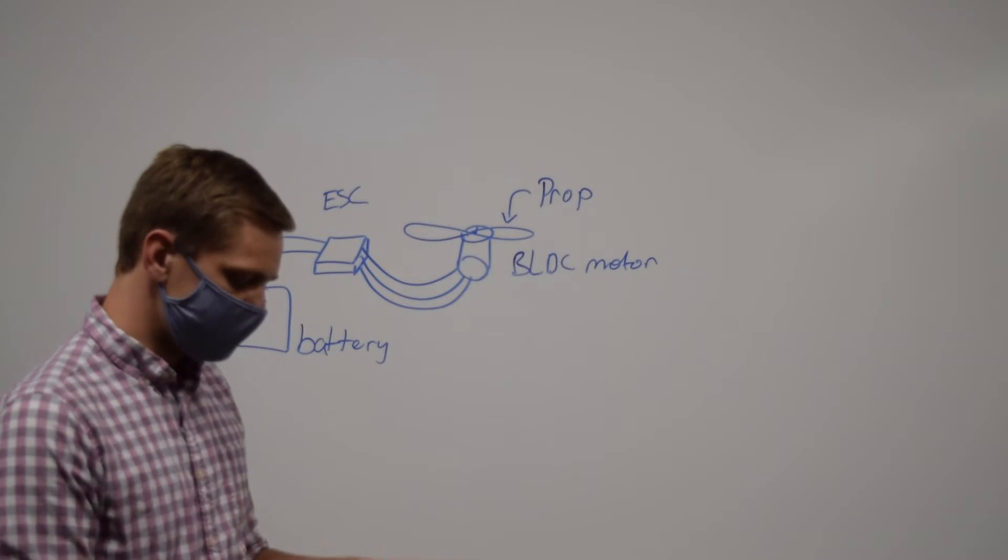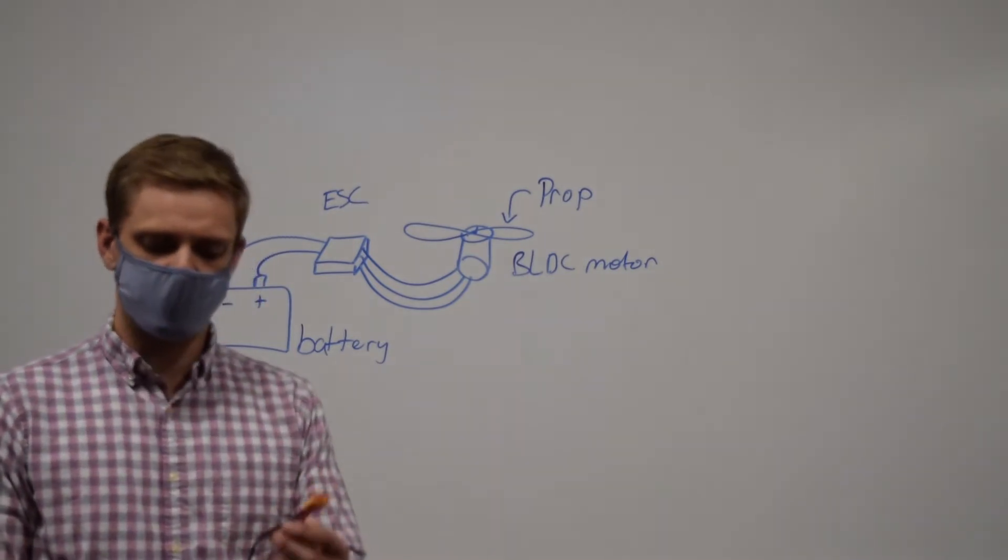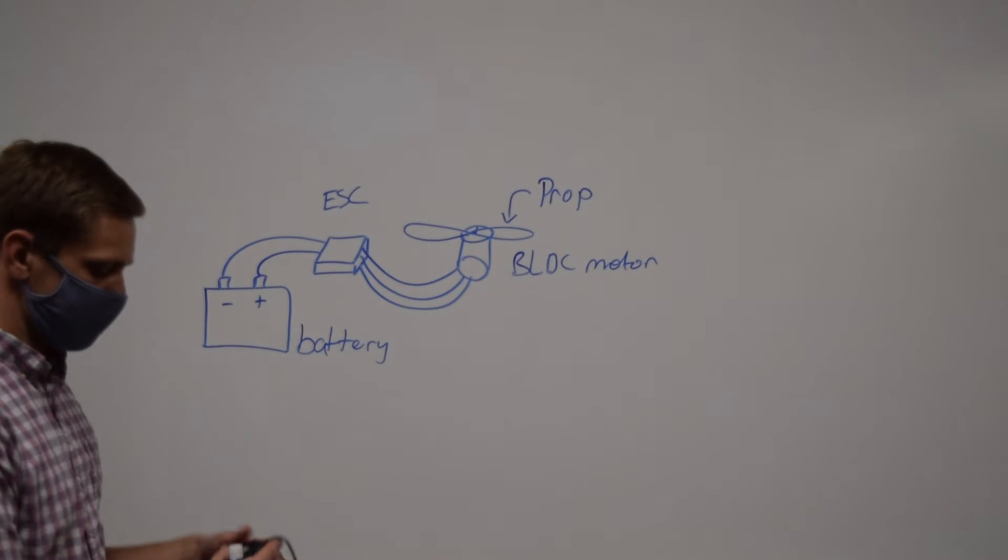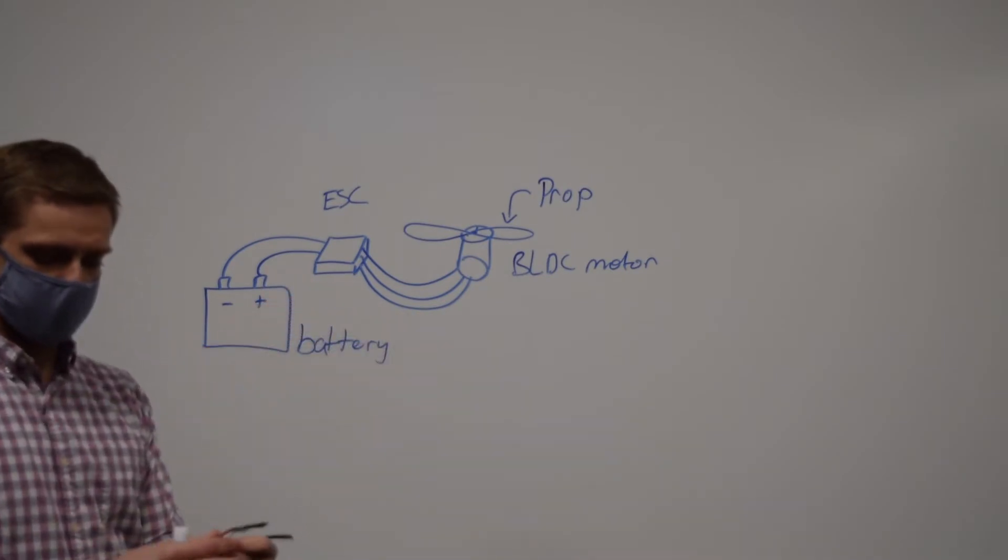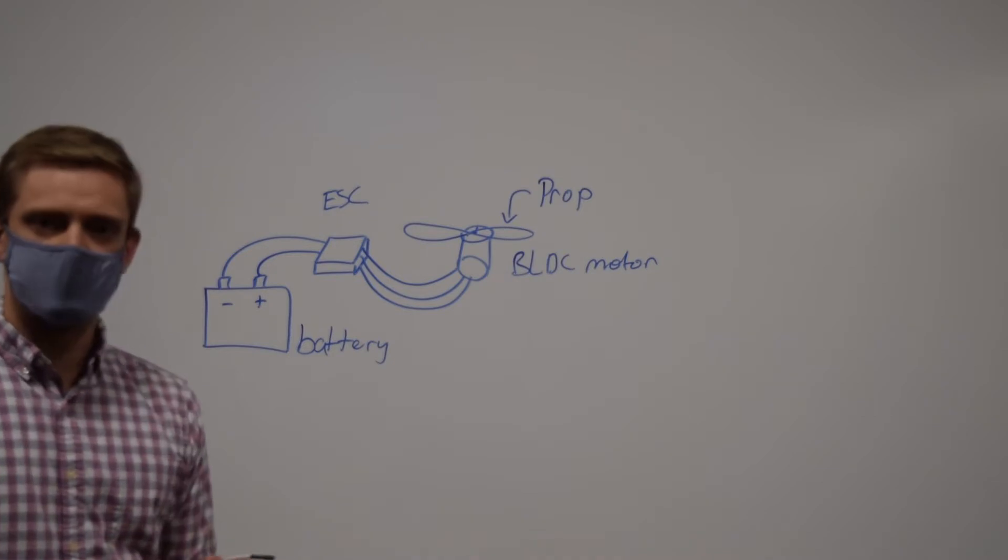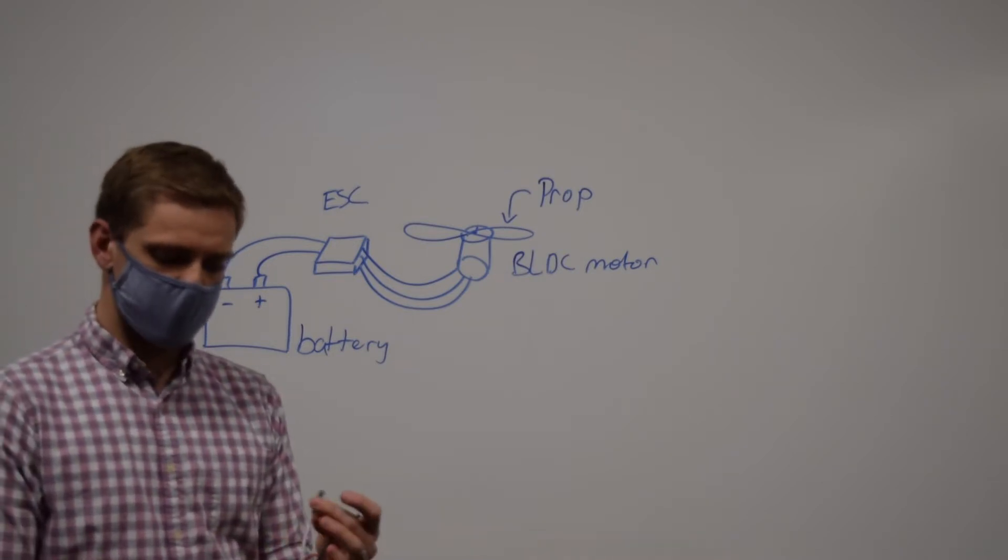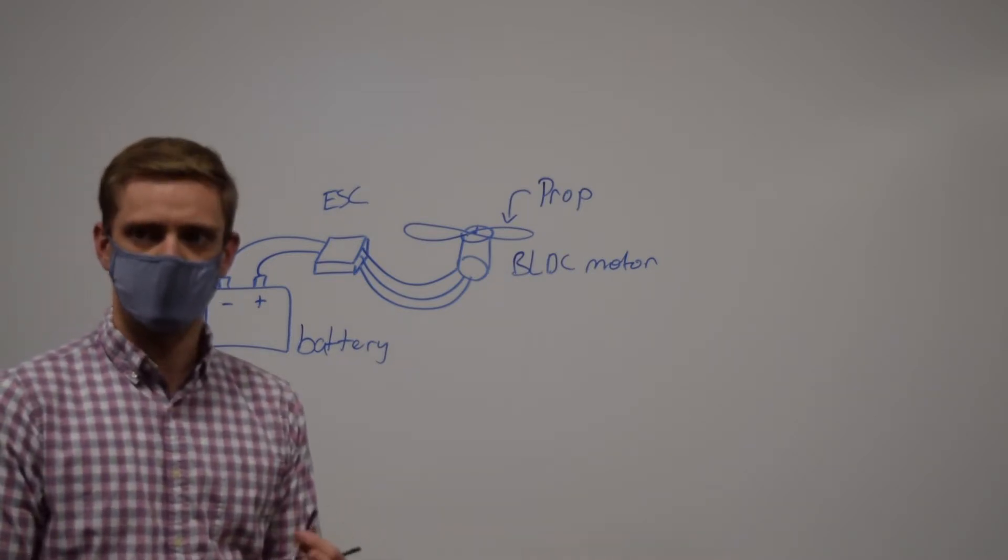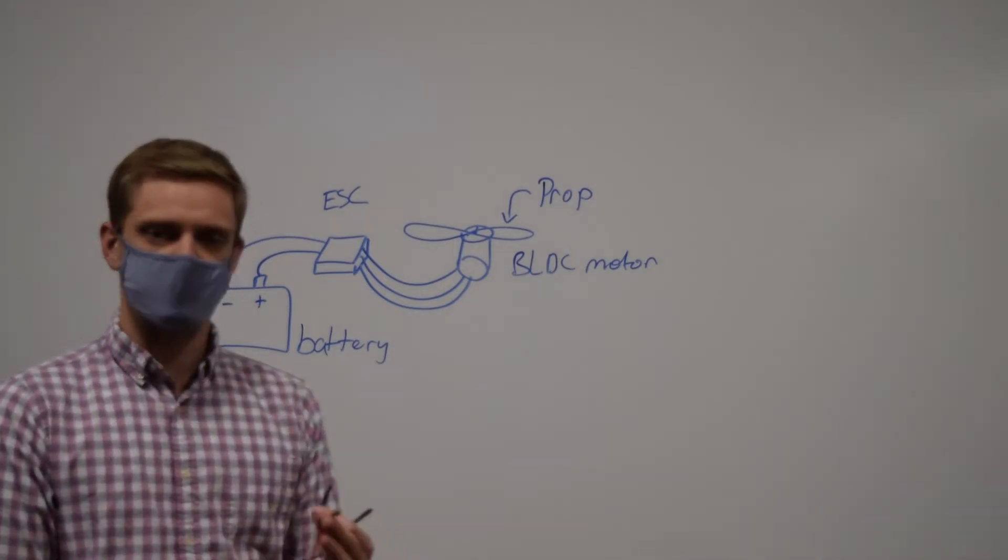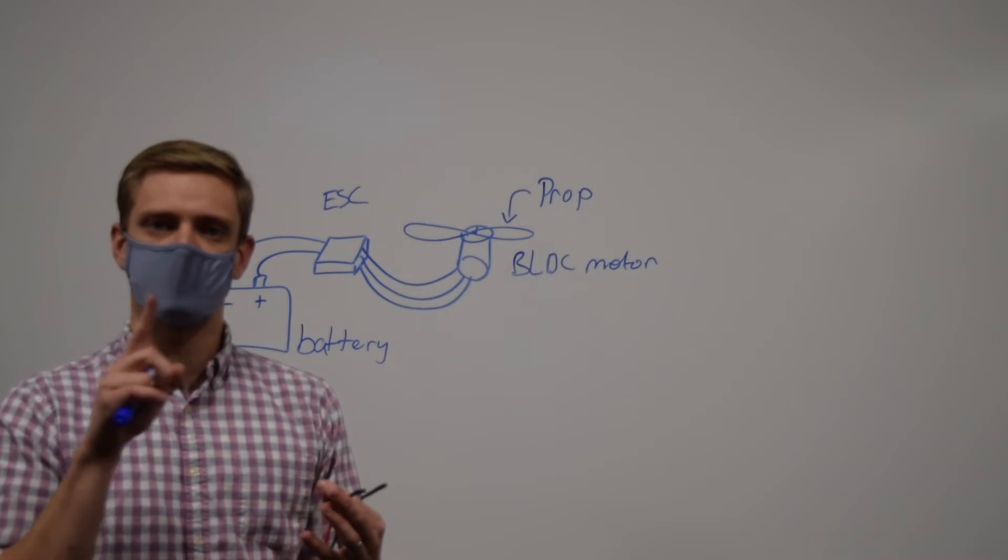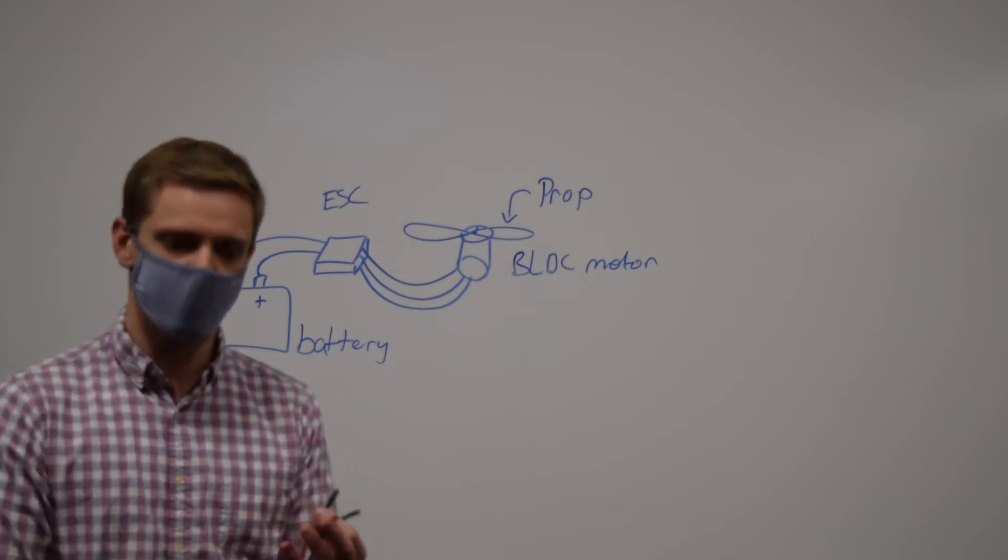You can see coming out of the speed controller, going into a speed controller, you have two plugs that go to your battery and it receives power. Coming out of your speed controller, you have three wires. These are the three poles that are going to control your motor and control the speed. These are different sections of electromagnets that are going to be turned on, allowing your stator to turn within the motor.